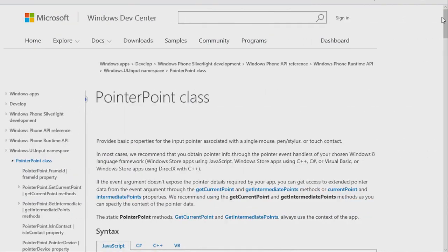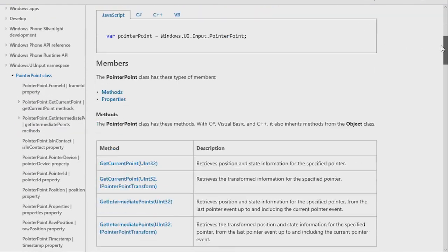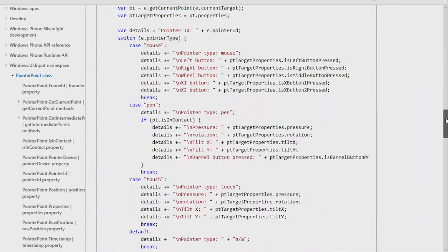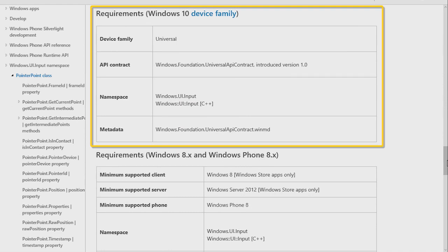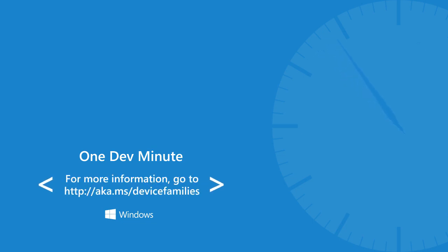Each reference topic tells you which device family the API belongs to. Windows device families let you write one app that reaches many different Windows devices. For more information, head here.